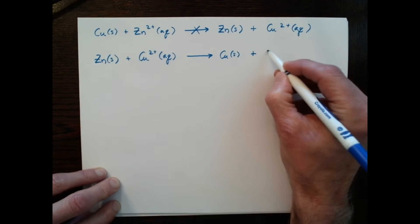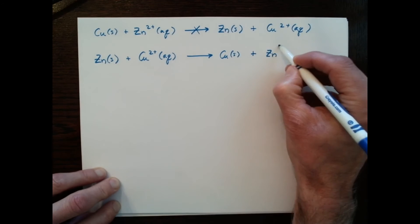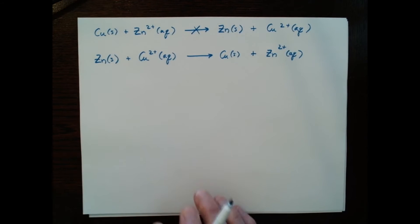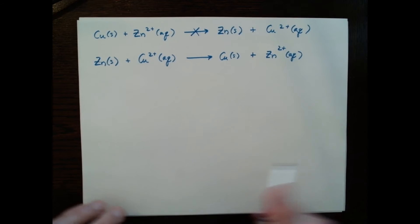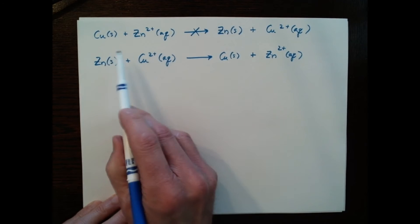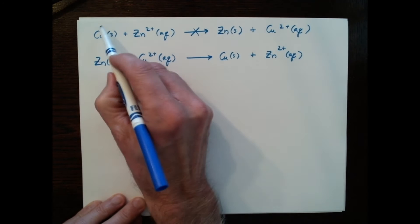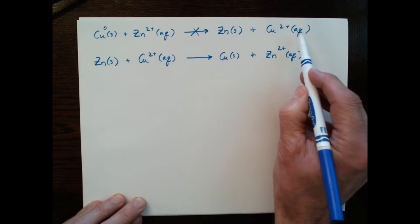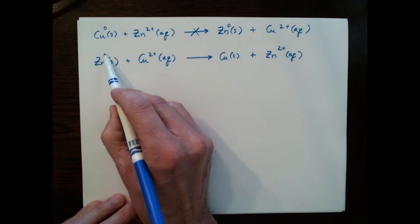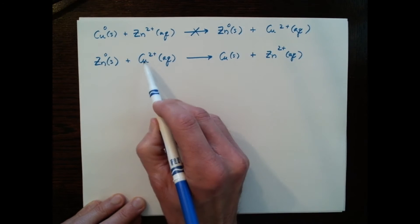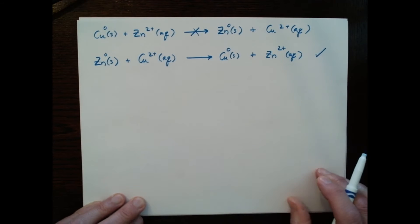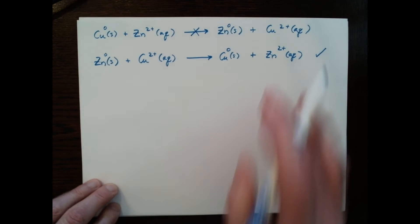We weren't able to see that some of the zinc metal actually dissolved and went into solution. What we'd like to do is predict which of these two processes would actually happen. You should recognize both of these are redox reactions — in one case we have copper oxidation and zinc reduction, whereas in the other we have zinc oxidation with copper reduction, and it turned out the overall reaction was spontaneous in that second case.